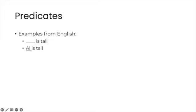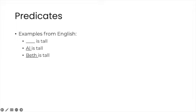This single gap left open by the predicate can be filled by individual names, such as AL to form the sentence AL ISTALL, or by BETH, yielding BETH ISTALL, or CLARE, which gives CLARE ISTALL. In English, they don't have to be proper nouns, they could be entire phrases, such as the carpenter from Des Moines.